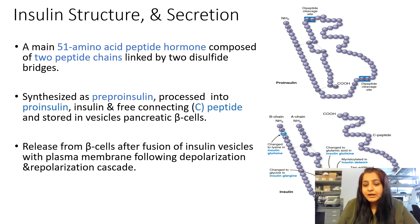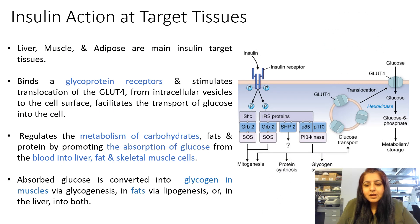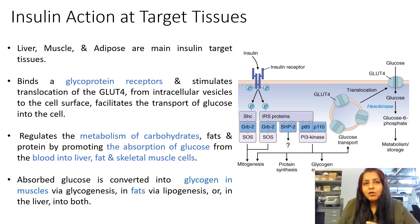Insulin is released into the blood via exocytosis after a cascade of depolarization and repolarization. Once released from the vesicle into the blood, it travels with the blood to target tissues. Virtually insulin acts on all types of organs present in the body because all types of organs express insulin receptors.